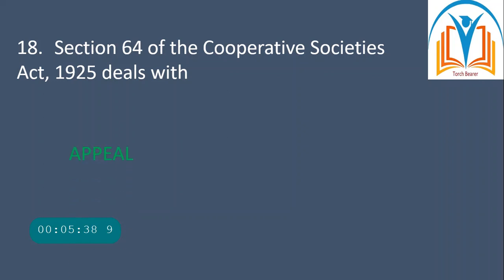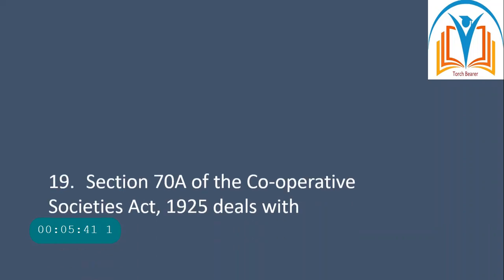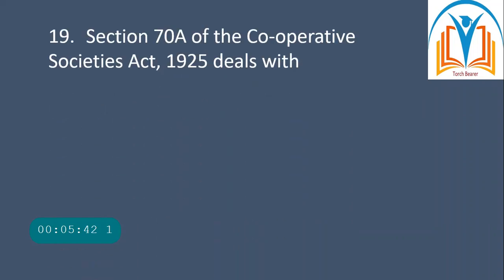Next, Section 64 of the Cooperative Societies Act 1925 deals with appeal. Question number 19: Section 70A of the Cooperative Societies Act 1925 deals with bar of jurisdiction.